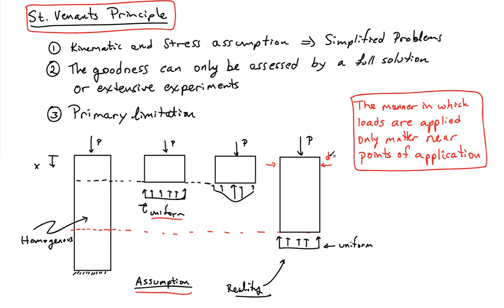And near is actually defined or normally ends up being defined with respect to the cross-sectional dimension here. So if this cross-sectional dimension is D, typically if you get one characteristic distance away, so this would be D, you'd find that at this location here, the stresses would be quite nearly uniform.